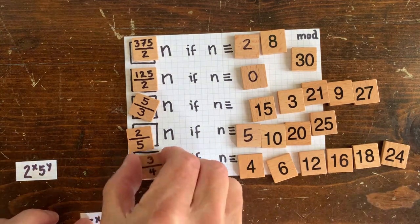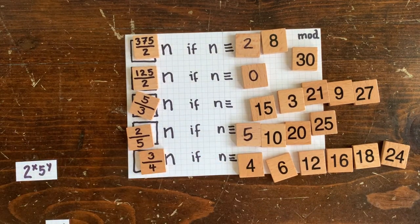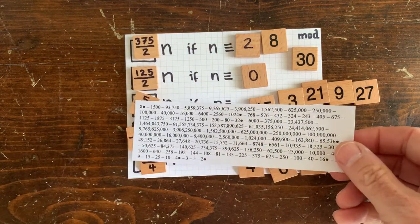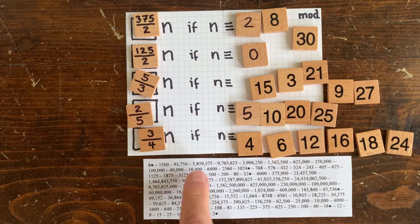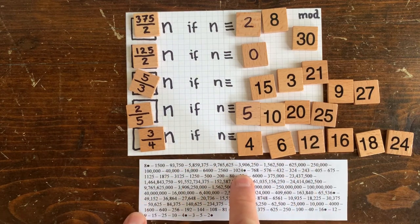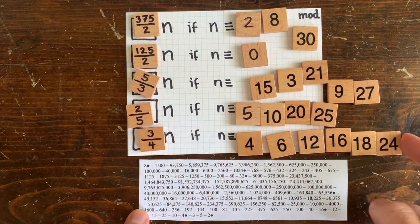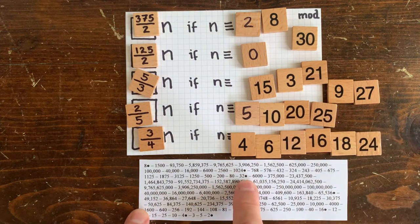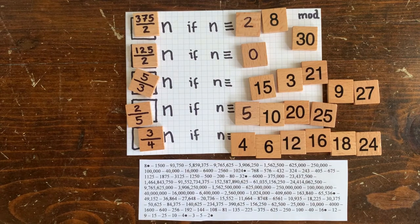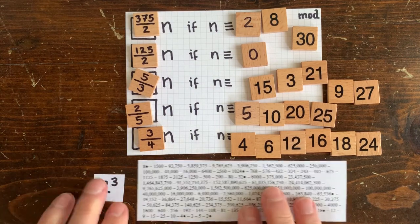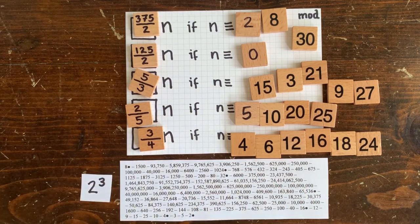And here's the rule in action. If we start with 2 to the 3rd, which is 8, the next step gives us 1500. The next step 93,750, and so on until we hit 1024, which is 2 to the 10th. And then we'll eventually get to 32, 65,536, 16, 4, and 2, which is 2 to the 1st. So, here we got from 2 to the 3rd all the way to 2 to the 1st.